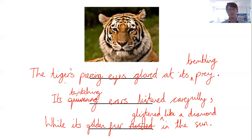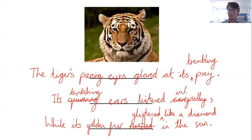Let me read it back to myself: 'The tiger's piercing eyes glared at its trembling prey. Its twitching ears listened carefully, while its golden fur glistened like a diamond in the sun.' Actually, I don't like the word 'carefully' listening back to it. I prefer 'intently' — like it's listening because something's about to happen, creating a sense of suspense.